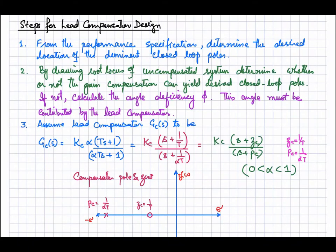In this video we are going to discuss the design of the lead compensator. The lead compensator is designed to adjust the time domain specifications of a closed-loop system. PI compensation and lag compensation are both used to eliminate the steady-state error, but lead compensation is used to improve the time domain specifications of your closed-loop system.